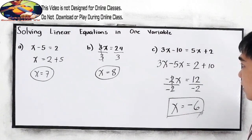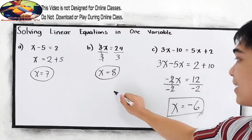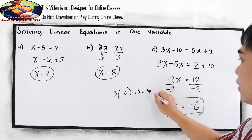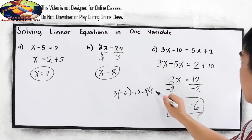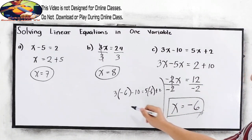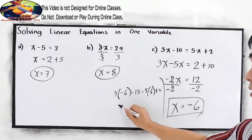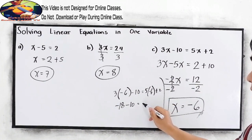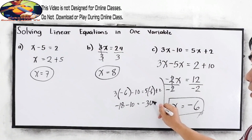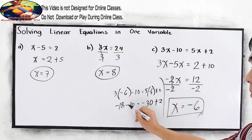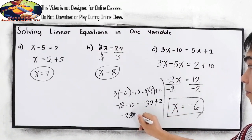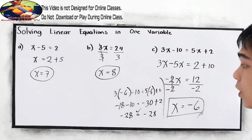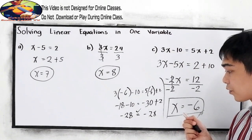So x is negative 6. Let us check: 3 times negative 6 minus 10 is equal to 5 times negative 6 plus 2 — they must be equal. 3 times negative 6 is negative 18; negative 18 minus 10 is negative 28. 5 times negative 6 is negative 30; negative 30 plus 2 is negative 28. They are equal, so our answer for x is correct.